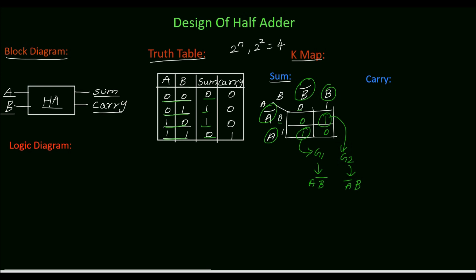So sum is equal to group 1 we have A B complement plus group 2 we have A complement B.